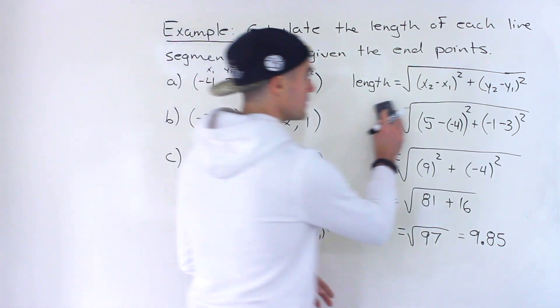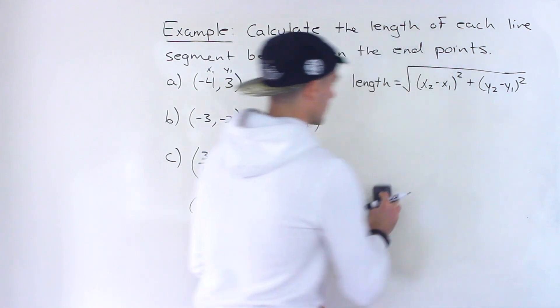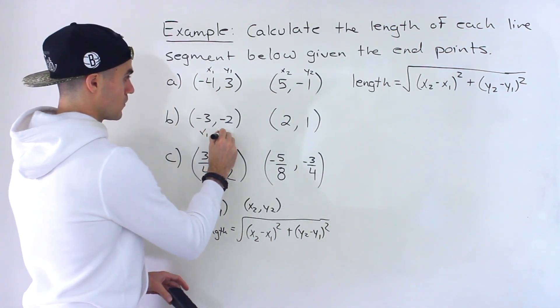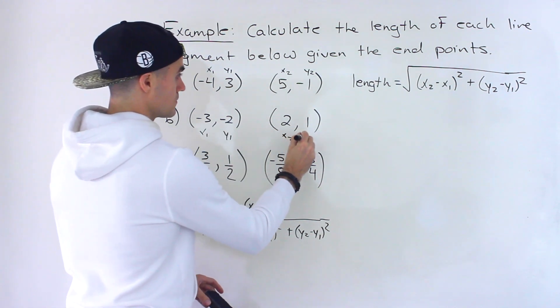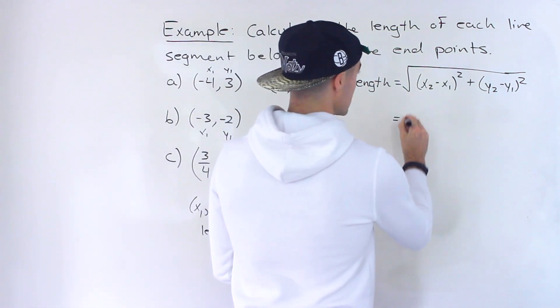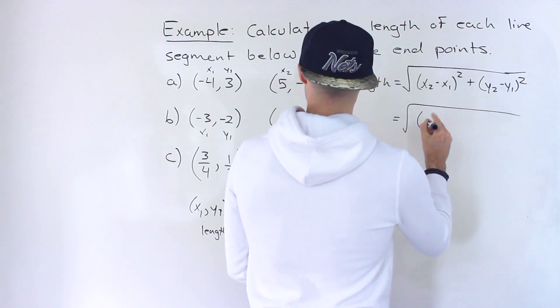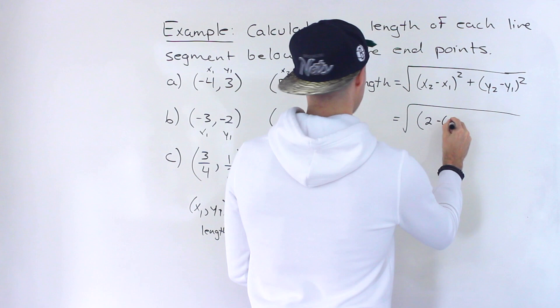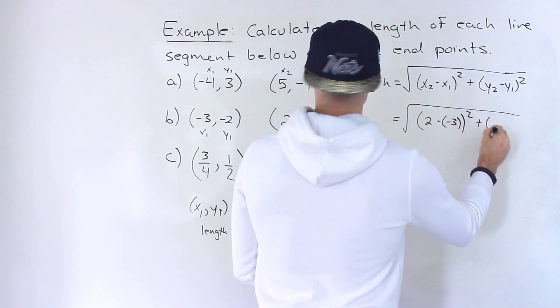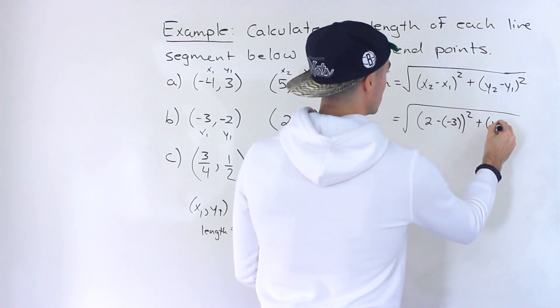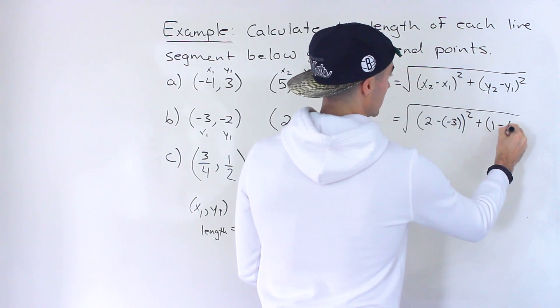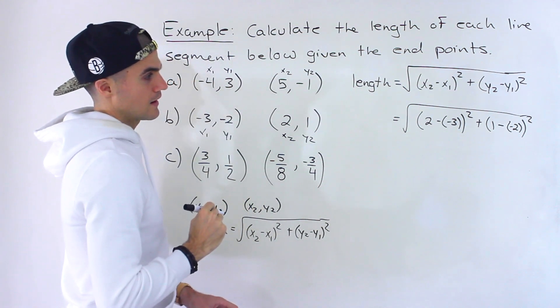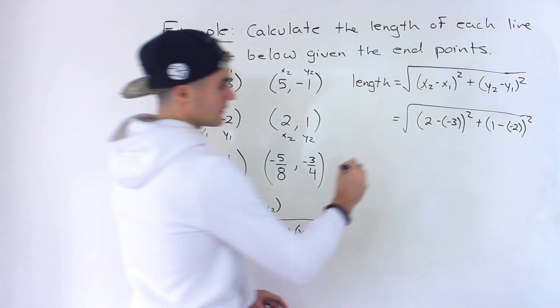Now what about part B? So in part B, let's first label these. We have x1, y1. We've got x2, y2. So we'd have the square root of x2 minus x1. Then we got y2 minus y1. Like that. So what would we get here?